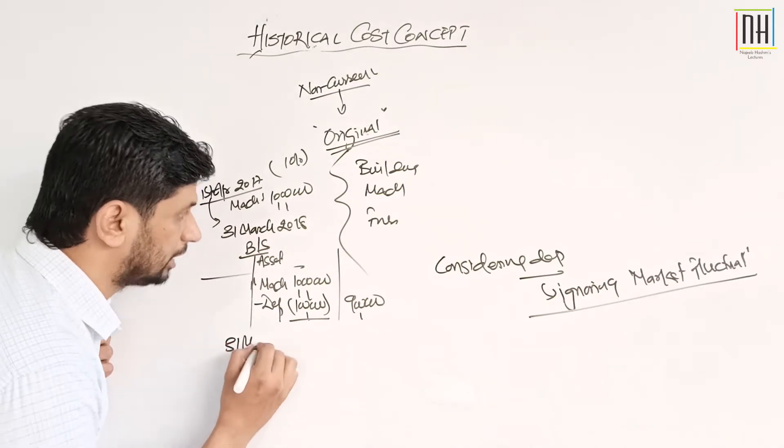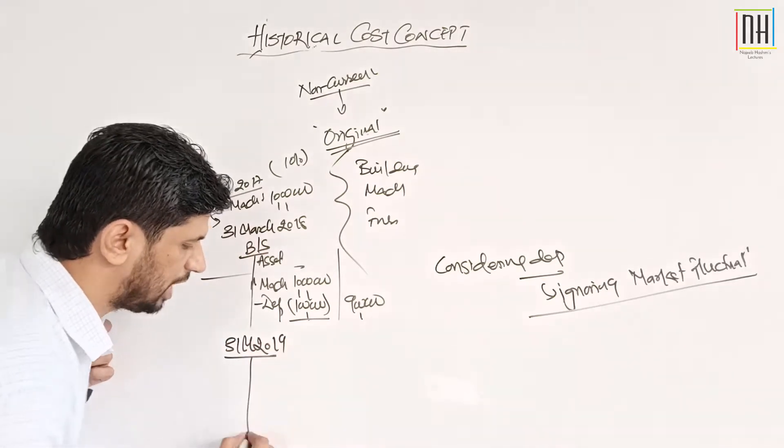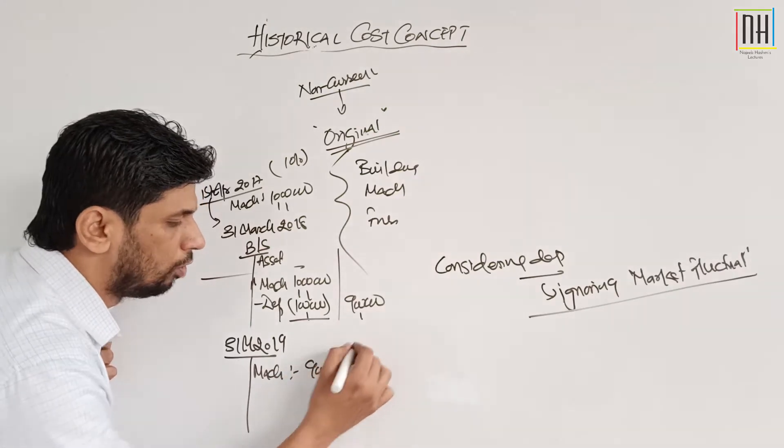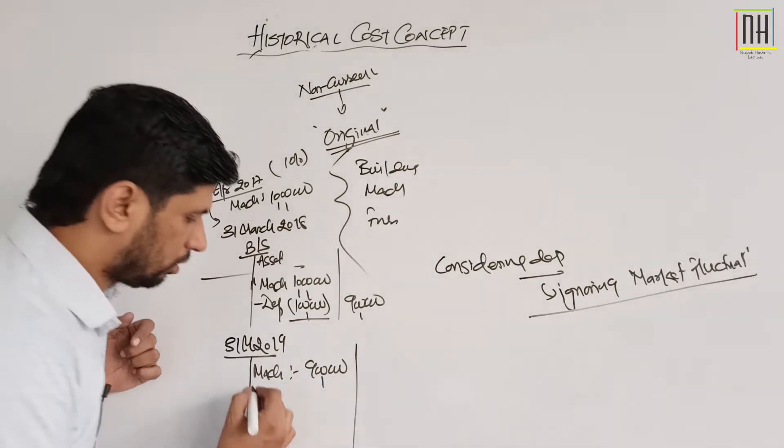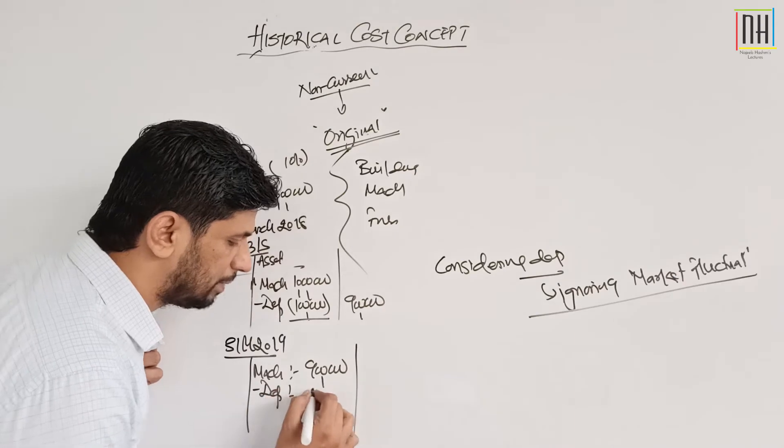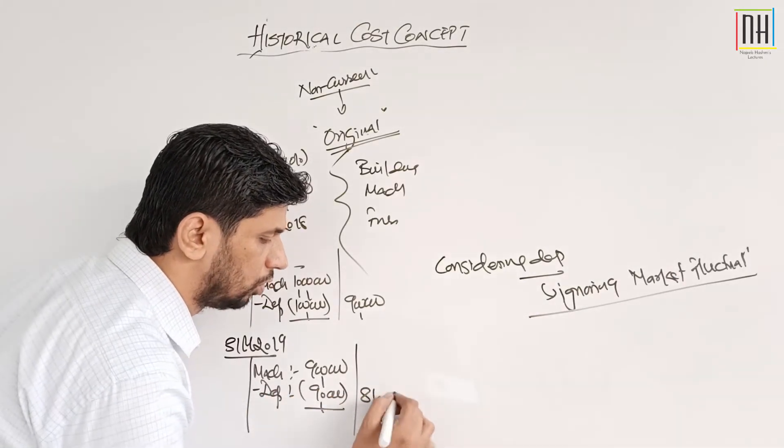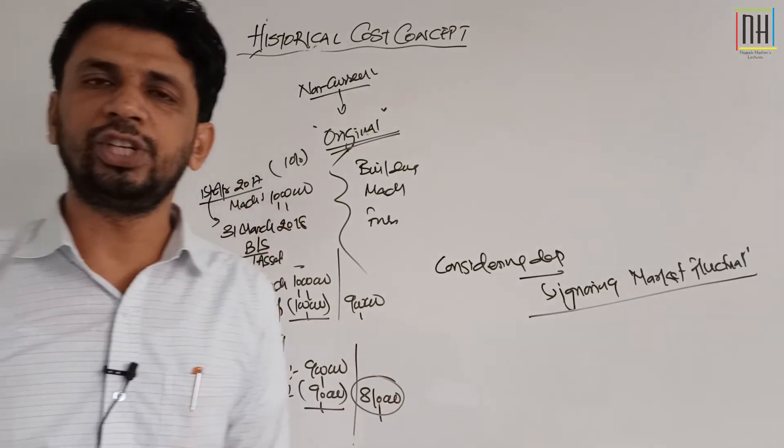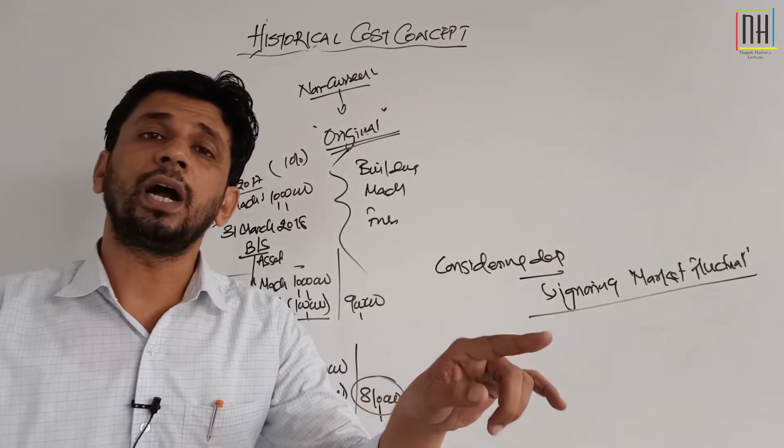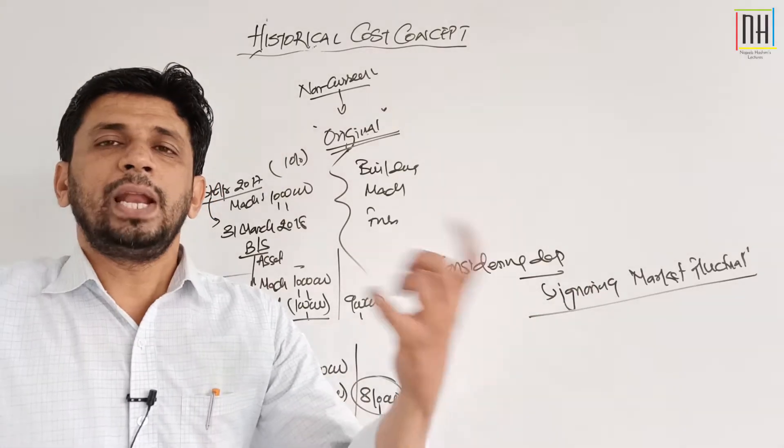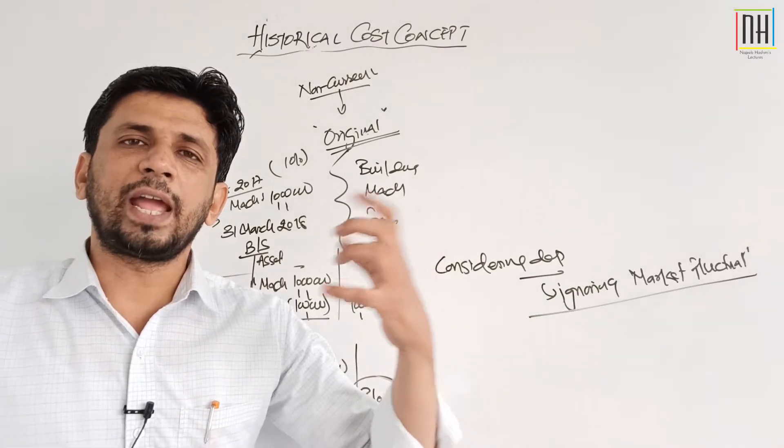After one year, on 31st March 2019, we are again preparing the balance sheet. Machinery ki value - opening balance was 9 lakh. Us mein se phir depreciation minus karenge, WDV method se 90,000. So we have to disclose 8 lakh 10,000 in the balance sheet.